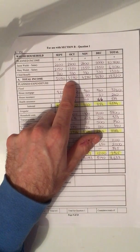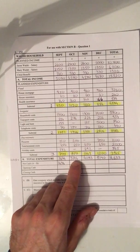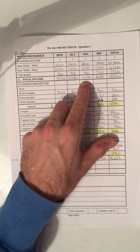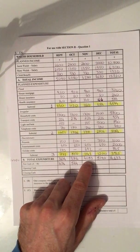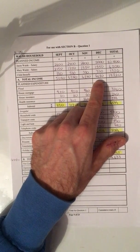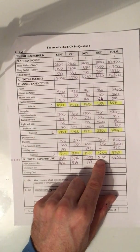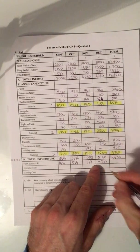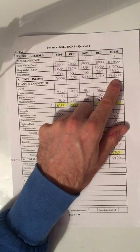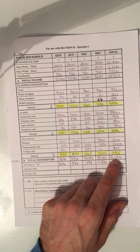For October: total income 4280 minus 3716 equals 564. For November: 4280 minus 4083 equals 197. For December: income minus expenditure, 4680 minus 5190 equals minus 510. And for the total column: 18,320 minus 16,633 equals 1687.